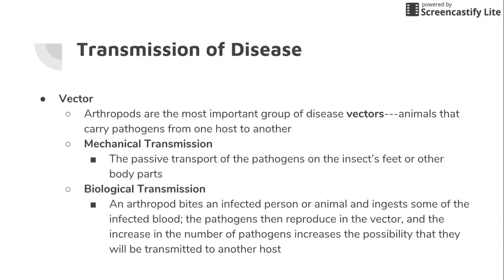Vectors, like we talked about last chapter, involve arthropods or insects that harbor different diseases and carry them to a host. There are two ways they can transmit diseases: mechanical and biological. Mechanical transmission is where the insect walks across something and picks up pathogens on its feet or body, then lands somewhere else and drops off the pathogens. A good example is a fly landing on a dead animal with nasty microorganisms, then landing on your food, dropping off the pathogens, and you consume it and get sick. The fly wasn't intentionally spreading disease — it just picked up some stuff and dropped it on your food.